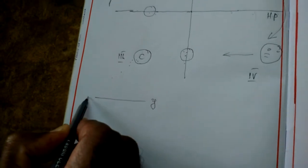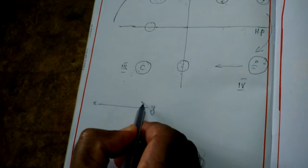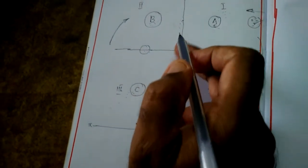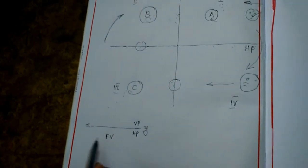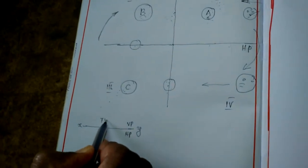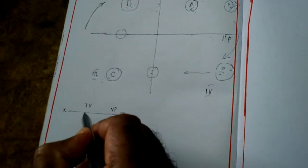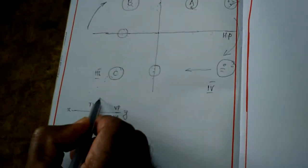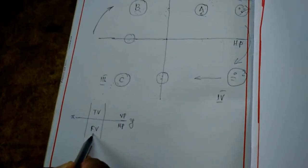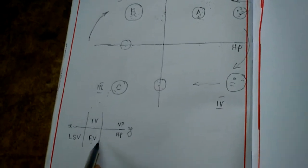The XY line is called the reference line, as we discussed in the previous class. In this case, this is VP and this is HP. So the front view is below XY line, and the top view is above XY line. Both occupy positions — one below and one above the XY line. Whenever you want to see side views, in this case the left side view occupies the left of the front view.